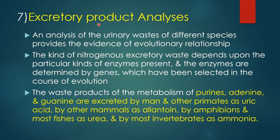Excretory product analysis: an analysis of urinary waste of different species provides evidence of evolutionary relationships. The kind of nitrogenous excretory waste depends on the particular kind of enzymes present, and the enzymes are determined by genes selected in the course of evolution. The waste products of purine metabolism — adenine and guanine — are excreted as uric acid by man and other primates, as allantoin by other mammals, as urea by amphibians and most fishes, and as ammonia by most invertebrates.